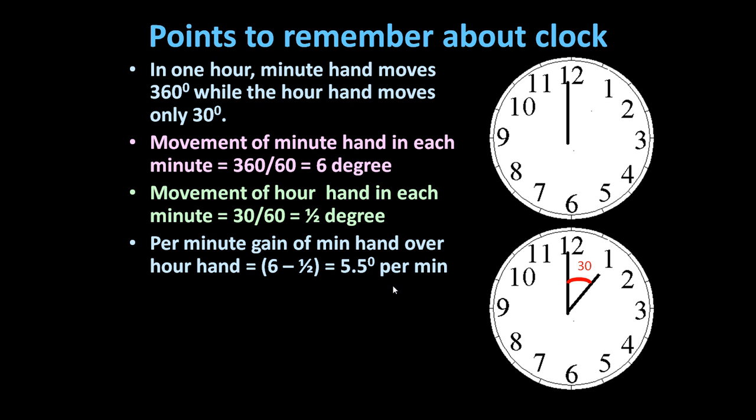...per minute gain of the minute hand over the hour hand is equal to 6 minus half, which equals 5.5 degrees. This means in every minute, the angular difference between the hour hand and minute hand will be 5.5 degrees.